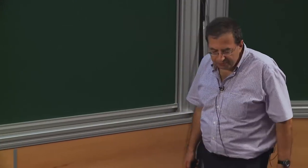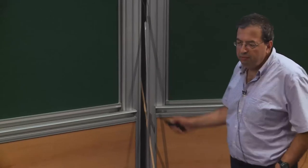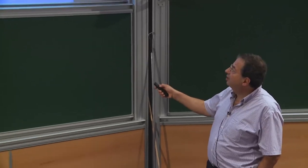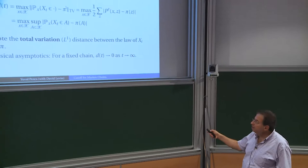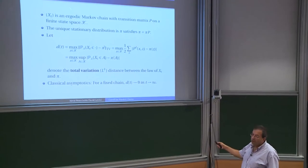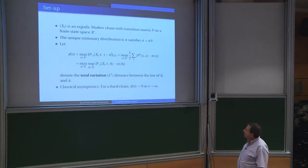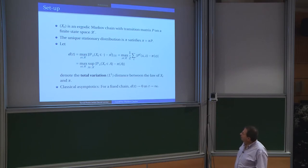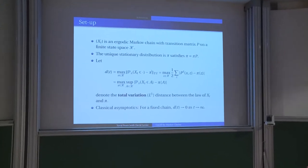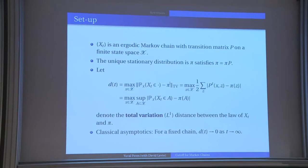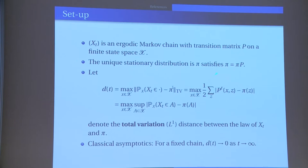Just to fix some notation: we're going to look at ergodic chains, meaning irreducible and aperiodic finite Markov chains. From every state you can reach every state, and it's also aperiodic, so there is some power of the matrix which is strictly positive. There's a unique stationary distribution denoted by pi, so pi equals pi times P — it's a row vector.